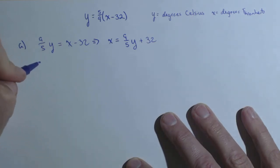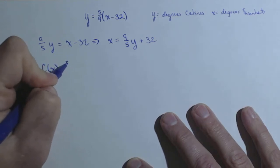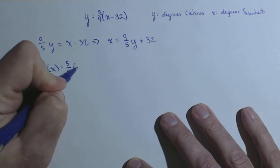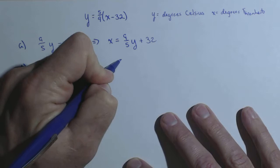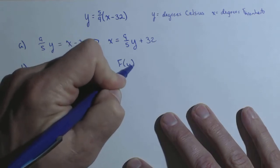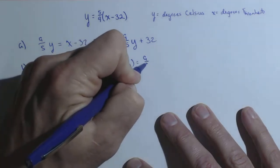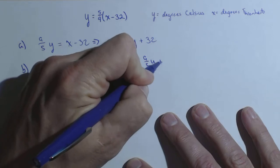Now, if we give these function names, say c of x equals the original that we were given, 5 ninths times the quantity x minus 32, and f of y equals 9 fifths y plus 32,